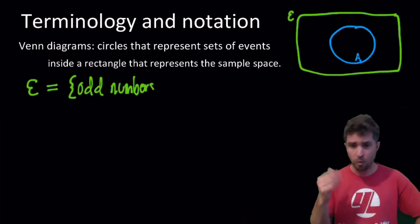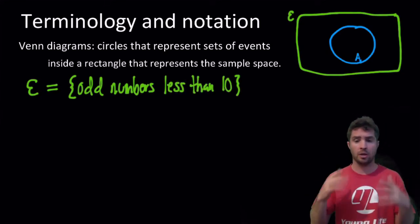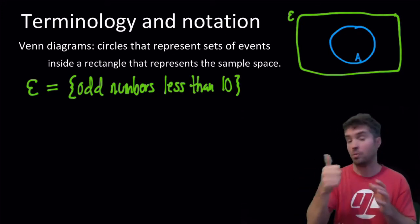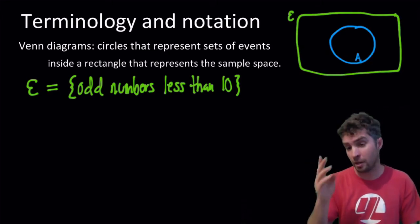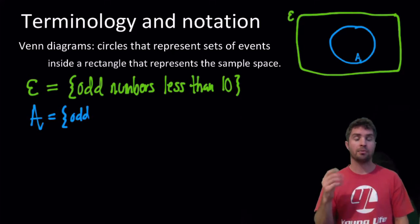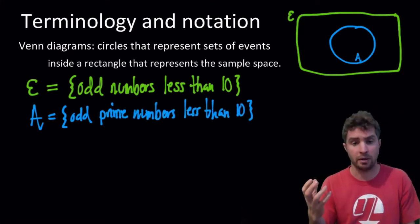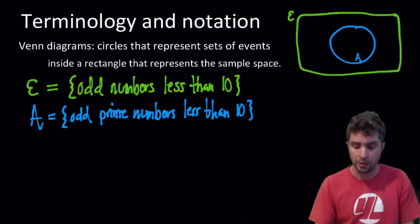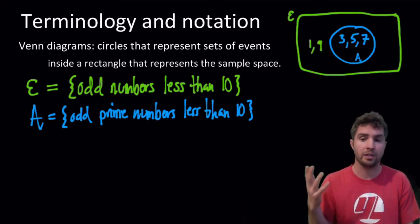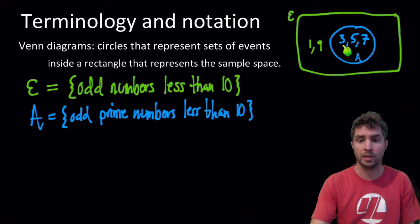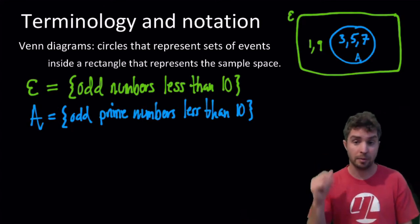For example, we might have a sample space of all the odd numbers less than 10. Imagine you are going to pick something out of a hat and the numbers you put in the hat are 1, 3, 5, 7, 9 — your odd numbers less than 10. And maybe you're interested in pulling out a prime number. So event A could be odd prime numbers less than 10. We can put that into our Venn diagram: 3, 5, and 7 are of course primes, and 1 and 9 are not.